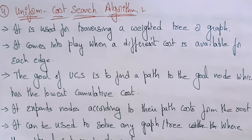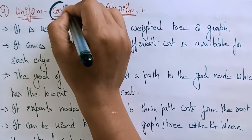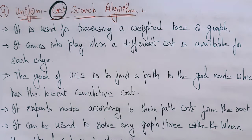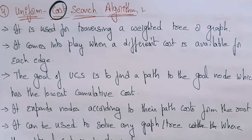Let's continue with uninformed search algorithms. Another type of uninformed search algorithm is Uniform Cost Search. Whenever you see the word 'cost,' it means we are giving a cost weightage to the tree or graph. Uniform means the path selected should be the one with the least cost to reach the goal.